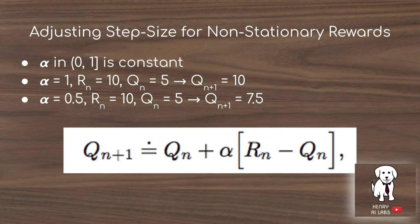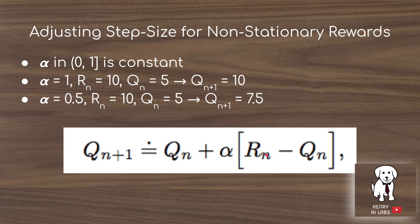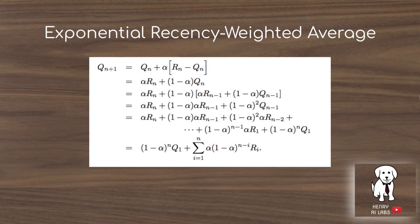For non-stationary rewards, adjusting the step size is important. An alpha parameter weights how much we update our expectation of each button based on how recently it was pressed. If alpha equals 1 and our prior estimate is 5 but we observe 10, we fully update to 10. If alpha equals 0.5, we update only partway, to 7.5. This approach — unevenly weighting more recent rewards — is called the exponential recency-weighted average. The unrolling of time steps shows how the reward at step n−3 impacts the current estimate based on alpha and elapsed time.